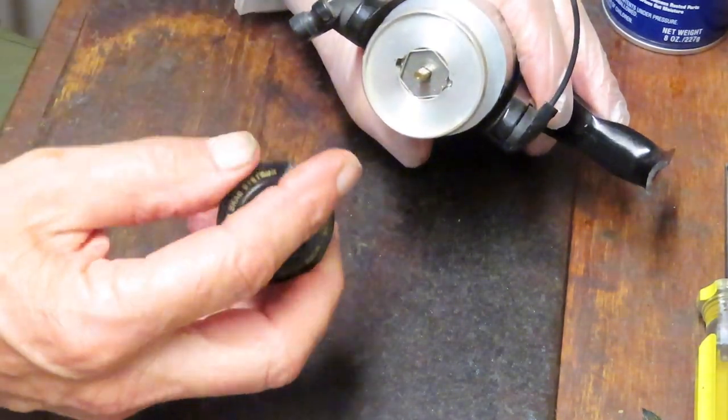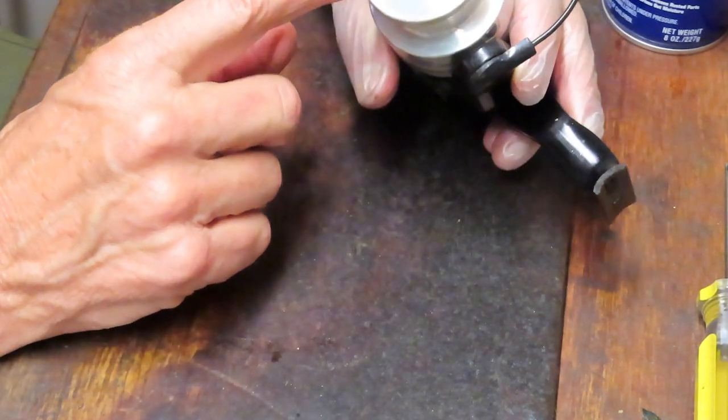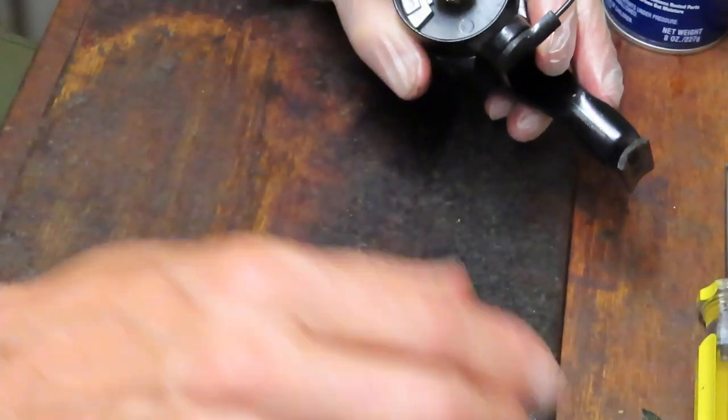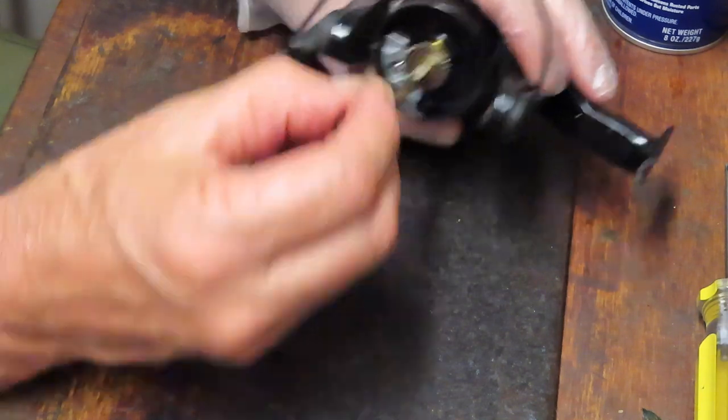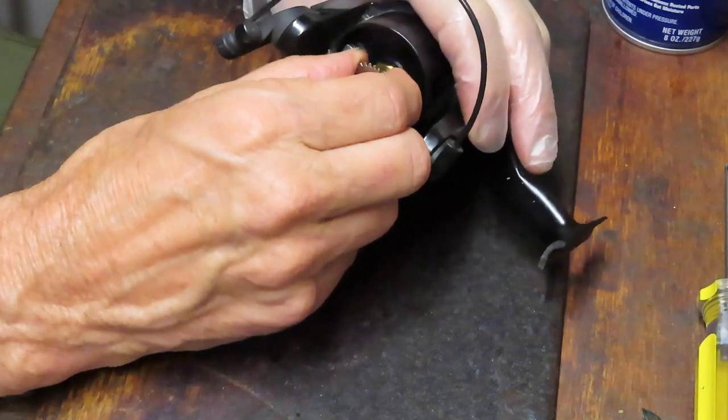So I just took the drag tensioner knob off. That opens up the spool here. We'll go into that spool later to see what kind of drag system this has. Then we can remove the little spool washer that keeps the height or helps you adjust the height on the spool.